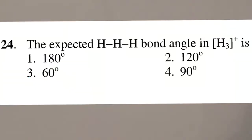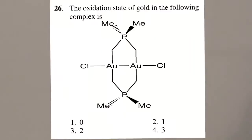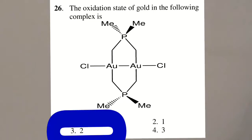Second question: in such type of gold complexes, the oxidation state of gold is 2. Therefore, option C is the right choice.